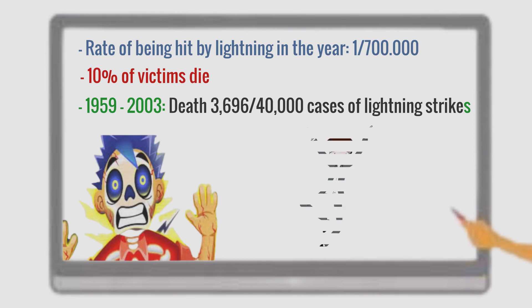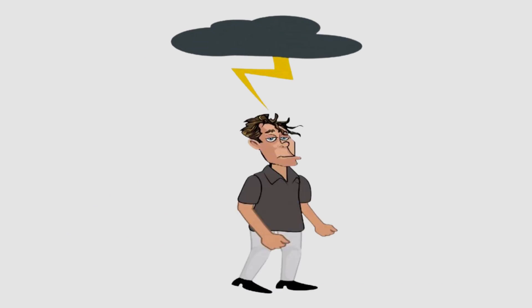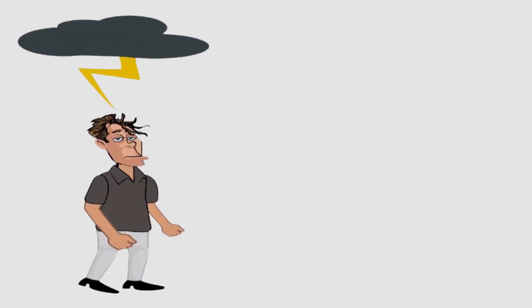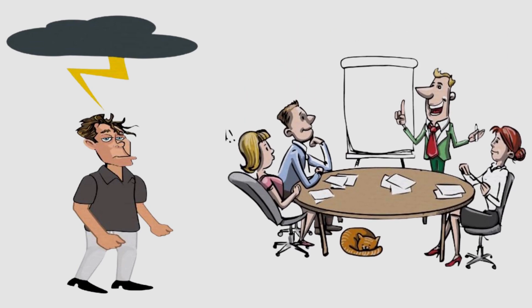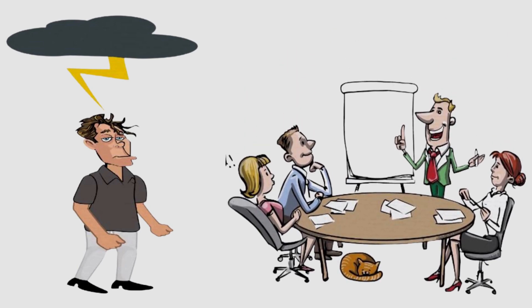It turns out that being struck by lightning is not necessarily fatal, but the long-term consequences will certainly exist. Before finding out what will happen to the body when being struck by lightning, let's find out what types of lightning strikes are there. Scientists have divided cases of lightning strikes into four different types.